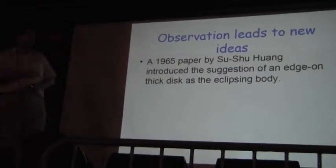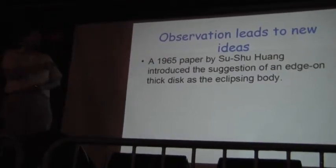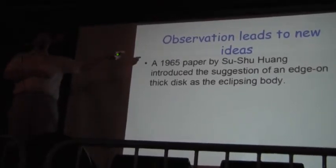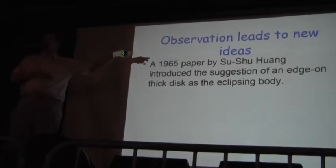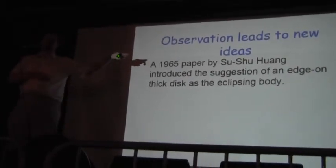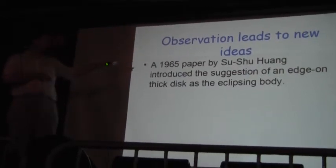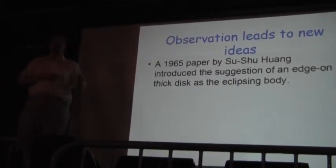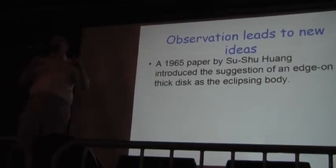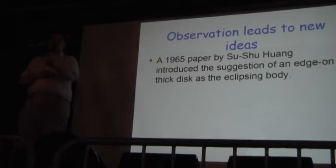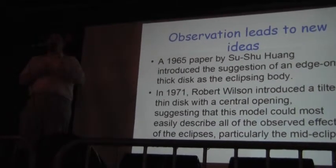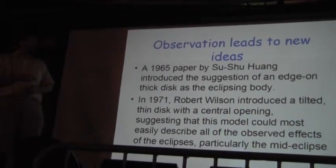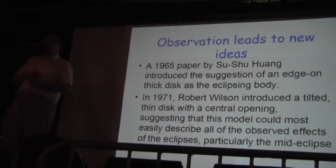In 1965, there was a paper published by Huang. I have a book by him, Huang and Yu, on stellar evolution. So, he's very well-respected. His text on stellar evolution is kind of the standard text for second- and third-year astronomy students. So, he suggested the idea of an edge-on thick disk. So, you have a small star embedded in a disk. So, there's no light coming out from that star, but it's the disk that produces the eclipse. And in 1971, the refinement of the model, tweaking the mathematics a bit, gave us a tilted disk with a nice little opening in it. Sort of like a donut.